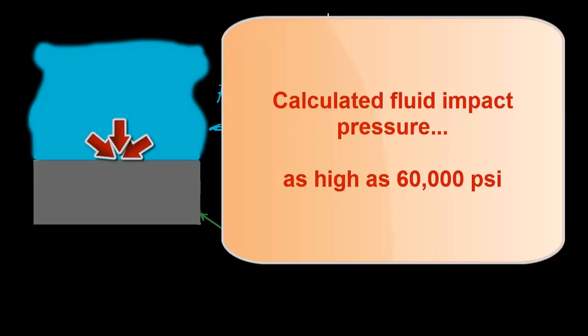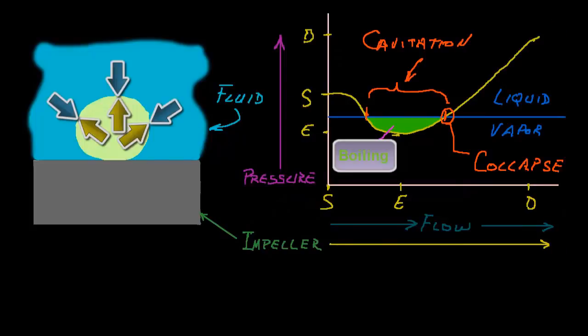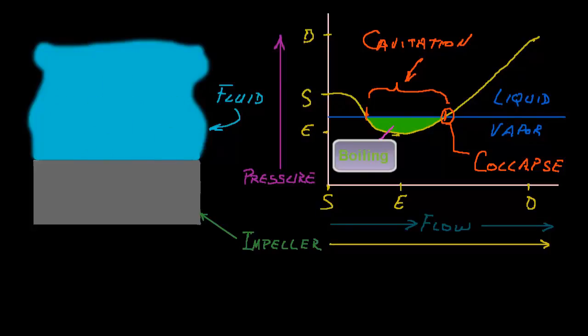By some estimates, that fluid impact pressure is calculated to be as high as 60,000 PSI. Pressures in that range are capable of plastically deforming some metals. It is important to remember that this process is not a one-time isolated event. Over time, the continual pounding of the fluid impact destroys the surface material at that location. And, the resulting pitting in the surface of the part is known as cavitation damage.